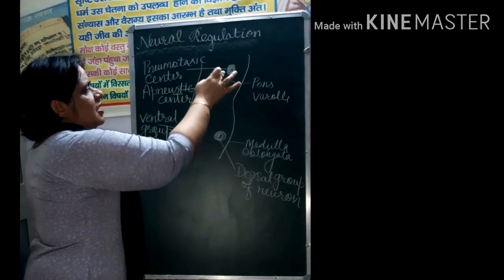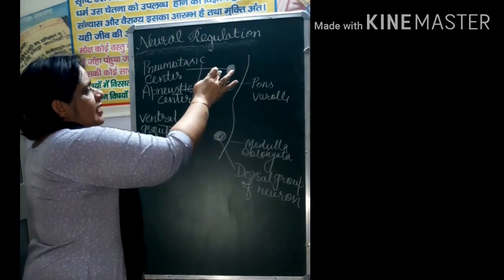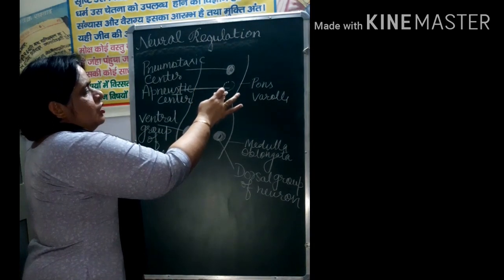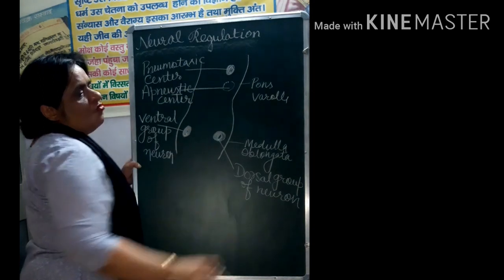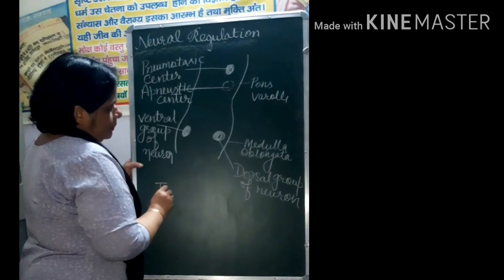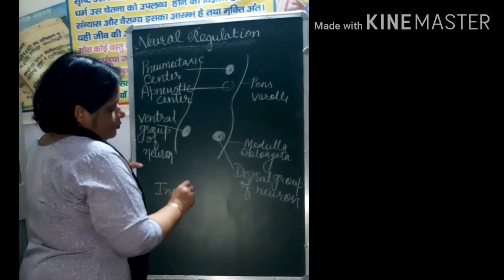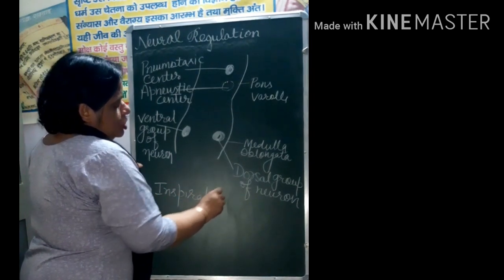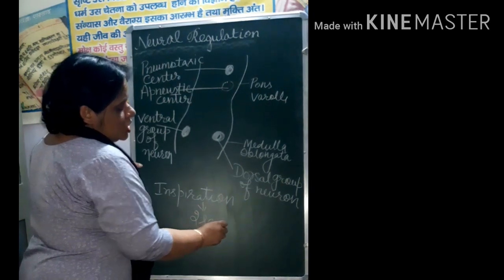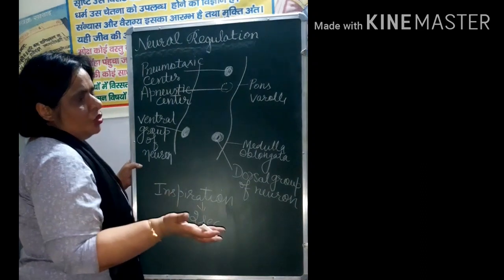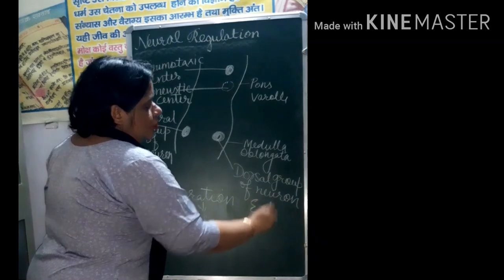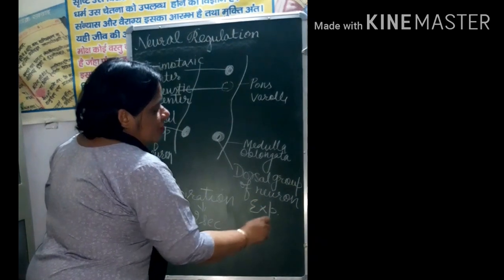If we talk about the Pons varolii, in Pons varolii there is present the Pneumotaxic center and just below the Pneumotaxic center there is present Apneustic center. If we talk about the breathing, Inspiration it is for 2 seconds. Inspiration wale muscle apne aap stop hotte hai toh just expiration start hojati hai and expiration for 3 seconds.